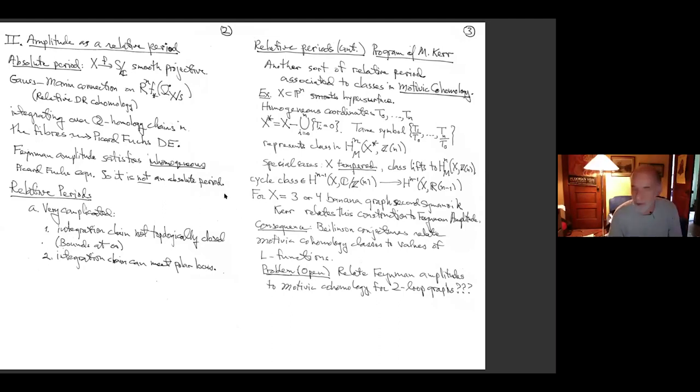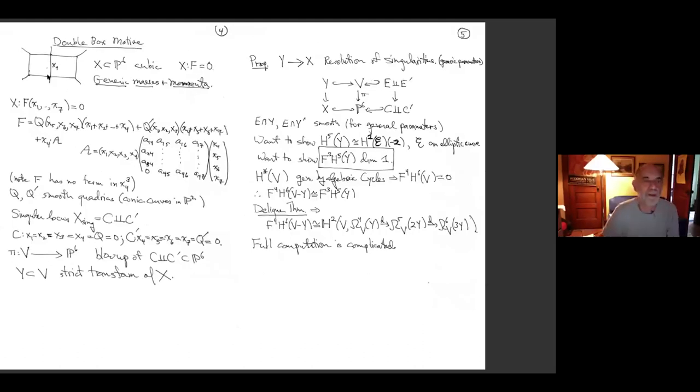So I'm going to focus on the double box, which I've drawn over here, simply because that's where I have the best results. I have results also for the kite, but the kite is sort of simpler. You just contract the two edges here and here. So let me just focus on the double box. Again, as I say, I take the external momenta and masses all to be generic.